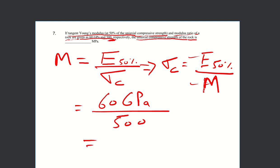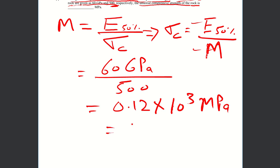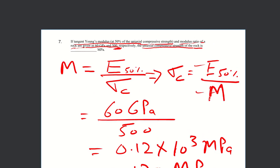When you solve this, you get 0.12 GPa. If you want to change gigapascal to megapascal, multiply by 10³, giving 120 megapascals. So the answer is 120.